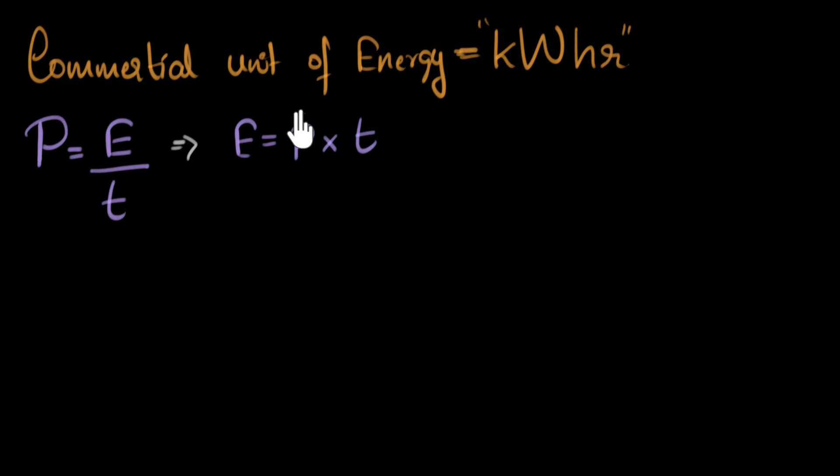Now, if we substitute for power in kilowatt, so let's say we have a device which has a power of one kilowatt, and if we switch it on for one hour, you put time as one hour, then the energy that that device would have consumed, by definition, as you can see, is one kilowatt hour. Does that make sense?